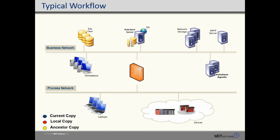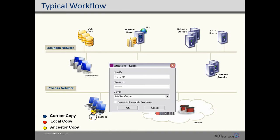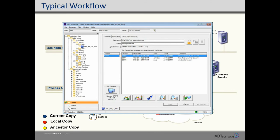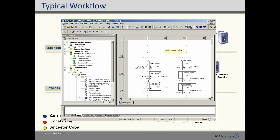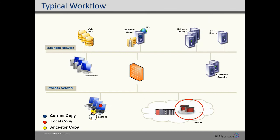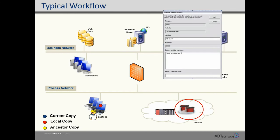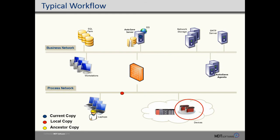Let's look at a typical workflow usage of Autosave. The user goes to a workstation and logs into Autosave. Autosave verifies their permissions and presents them with the programs they have access to. They select the program they want to edit, and Autosave will send a copy of that program to the workstation and launch them into their editor environment. The user makes changes as they normally would, and when they complete the edit session, a dialog box will ask them what they changed. Once they enter a comment, the revision is sent to the Autosave server, a new revision is created, and email notifications can also be sent.